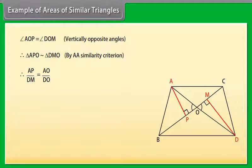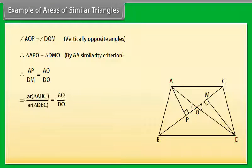Therefore, AP upon DM equals AO upon DO, which implies area of triangle ABC upon area of triangle DBC equals AO upon DO.